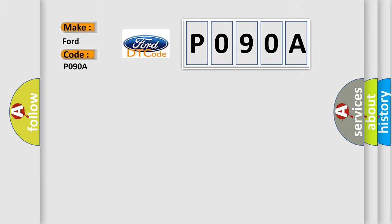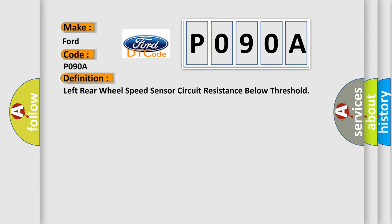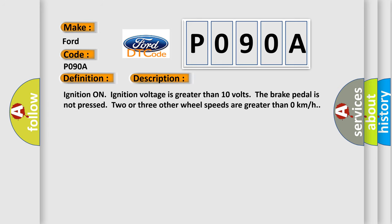The basic definition is left rear wheel speed sensor circuit resistance below threshold. And now this is a short description of this DTC code: Ignition on, ignition voltage is greater than 10 volts. The brake pedal is not pressed. Two or three other wheel speeds are greater than zero kilometers per hour.